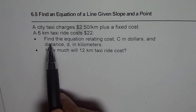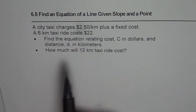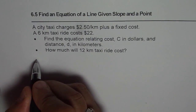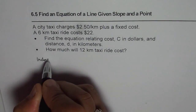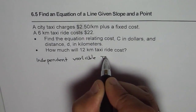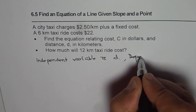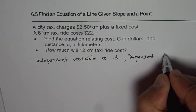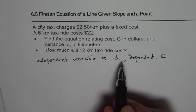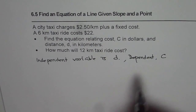The question is: find the equation relating cost C in dollars and distance D in kilometers. How much will a 12 kilometer taxi ride cost? Here we know that the independent variable is D, distance, and the dependent variable is C, the cost. These are the two variables which are linearly dependent, so we can write a linear equation to relate them.